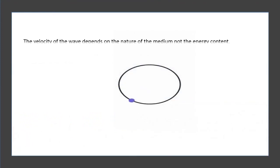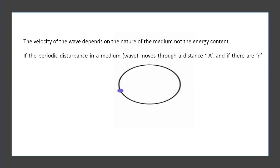The velocity of the wave depends on the nature of the medium, not the energy content. If the periodic disturbance in a medium (wave) moves through a distance and if there are n such cycles per second, the wave velocity v is equal to n times the wavelength.